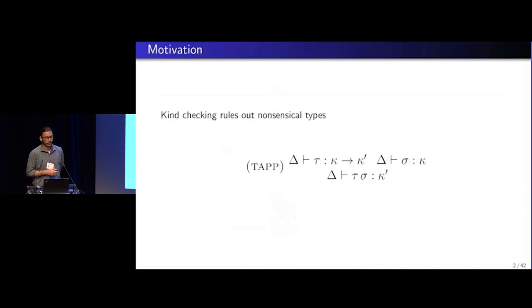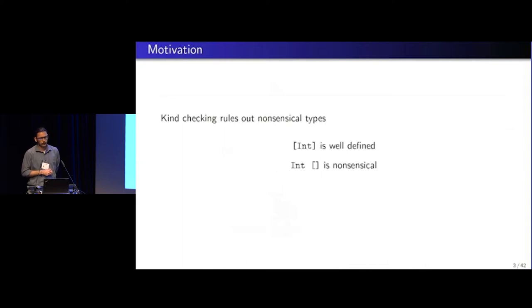So the rule just says, if Tau Sigma is a well-defined type, then Tau has to have a function kind kappa to kappa prime, and the argument type should be of kind kappa. So how does this work, right? We want to make sure that things like int list is well-defined.